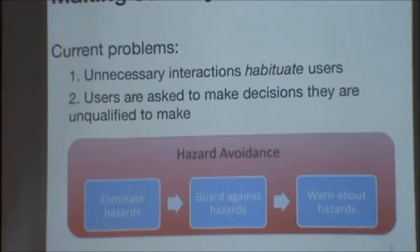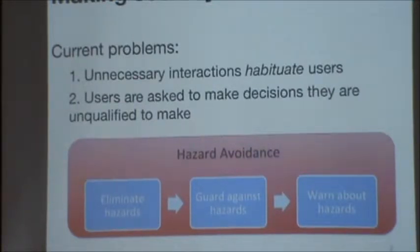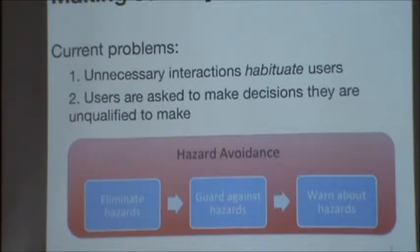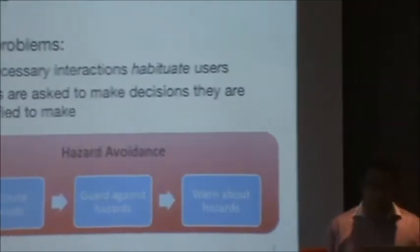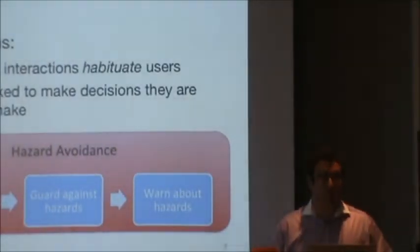The next best thing you can do is guard against the hazard to decrease the likelihood of risk. And then the last thing you should do, if none of this applies, is warn. Too often in computer science, we just skip to that last step — we throw up warnings and expect the user to just deal with it. And that's sort of the cause of a lot of the security and privacy problems we see today.